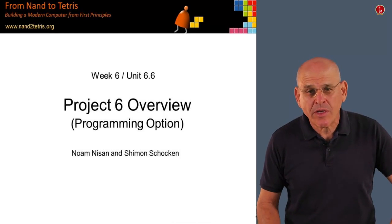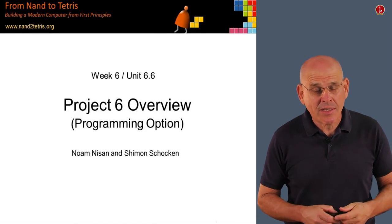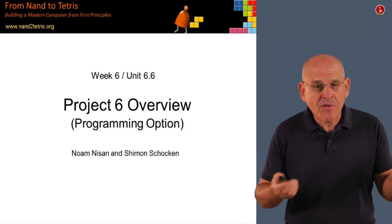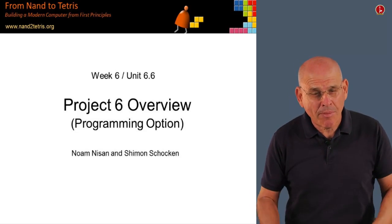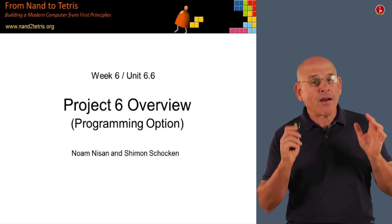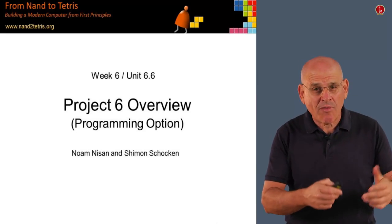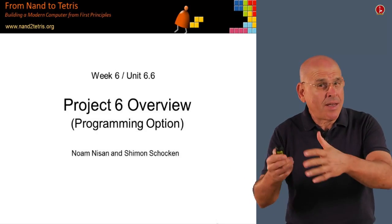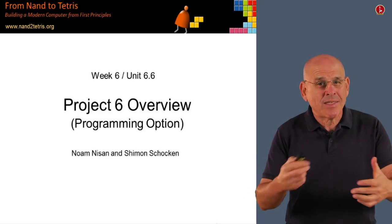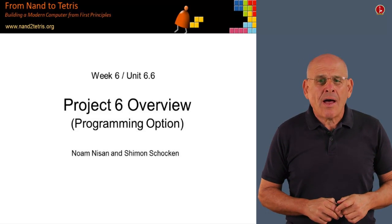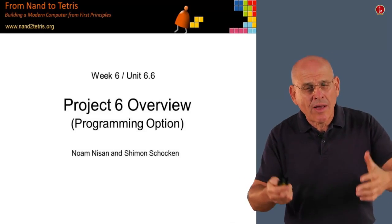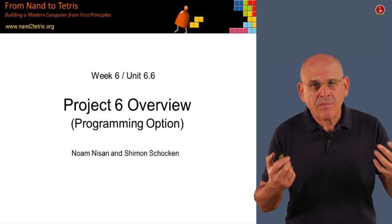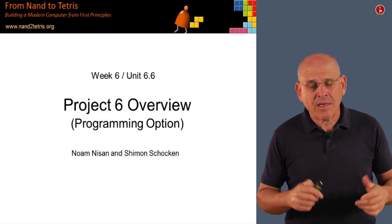In this unit, we finally come to a point where we describe how to develop project six, which is implementing the assembler. We have two options at this stage. If you want to write a program that actually implements an assembler using a programming language, you're welcome to listen carefully to this unit. If you don't have a programming background, there's another unit that describes an equivalent project that implements an assembler without writing code. But I think everyone, even if you don't write the assembler using a programming language, may benefit from listening to this unit and seeing an example of how to carry out a complex software development project.